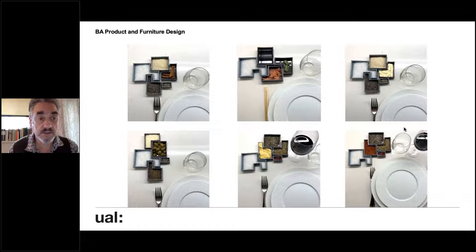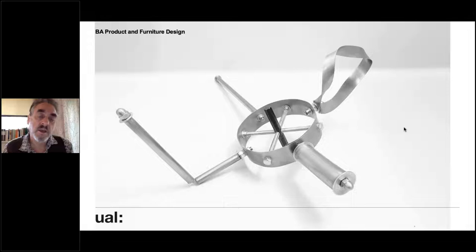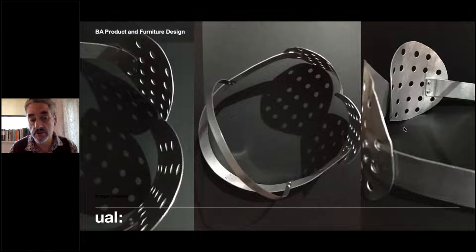This one is about function in regard to salt, pepper and condiments on a table — in this case a ceramic project and a metal project. This is actually a machine for drawing, which has a number of people holding onto the device at once so that the drawing becomes collaborative.